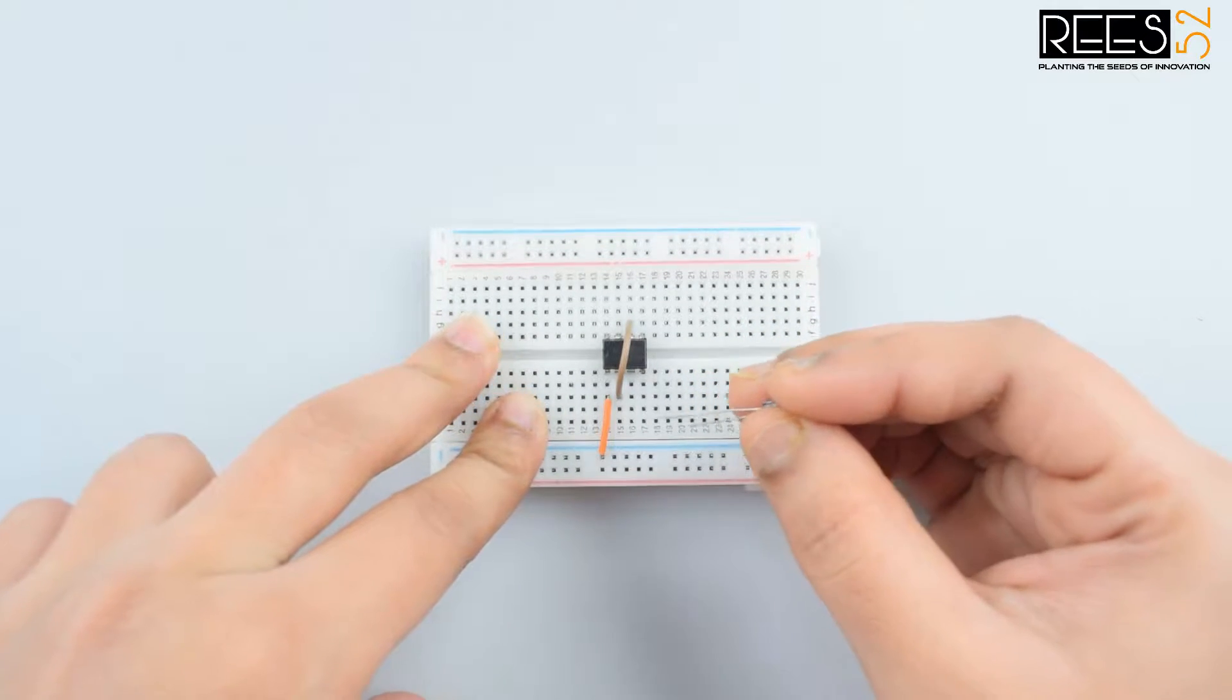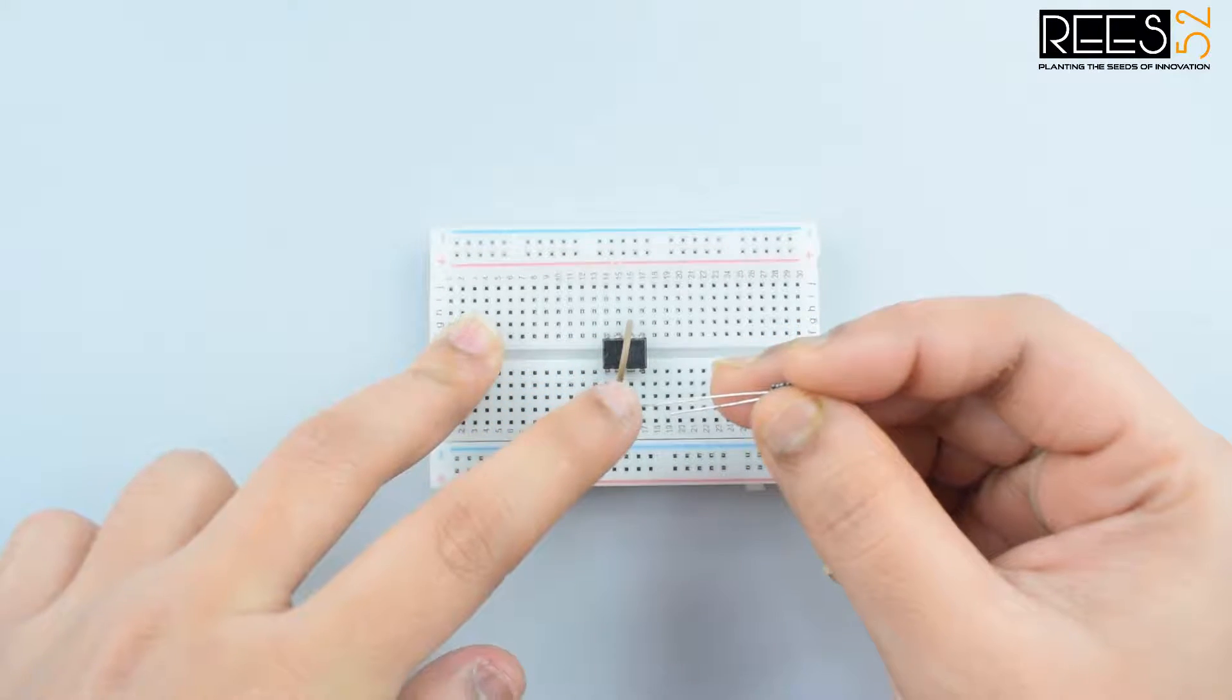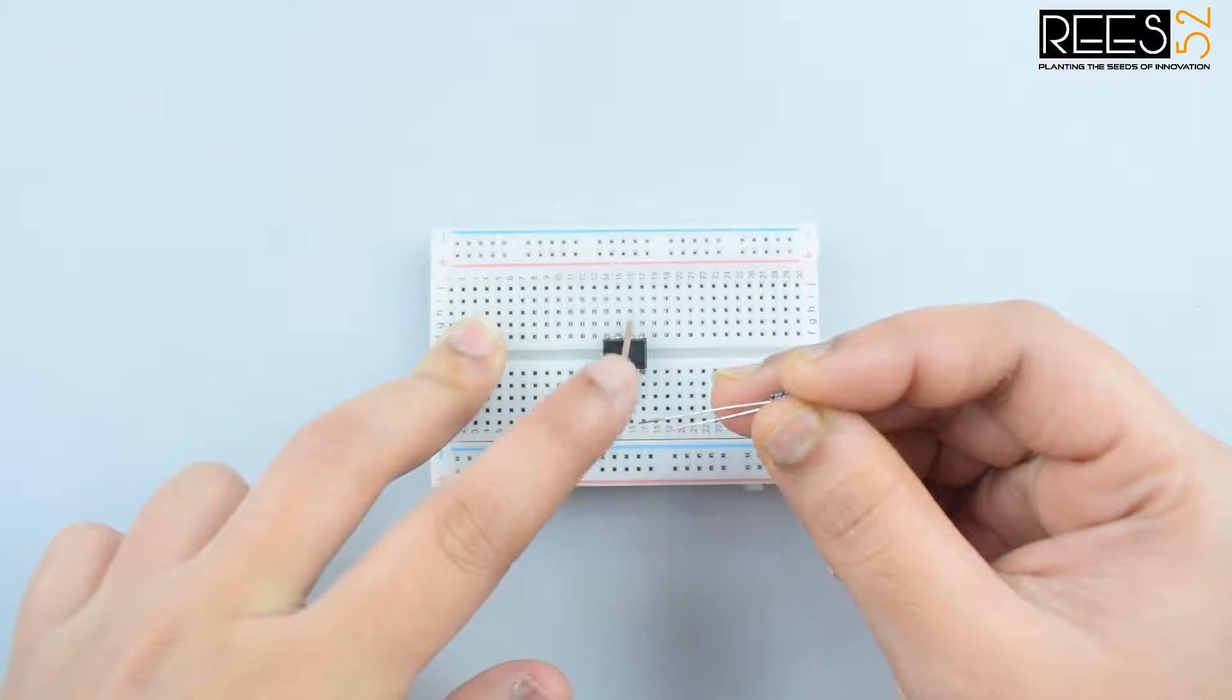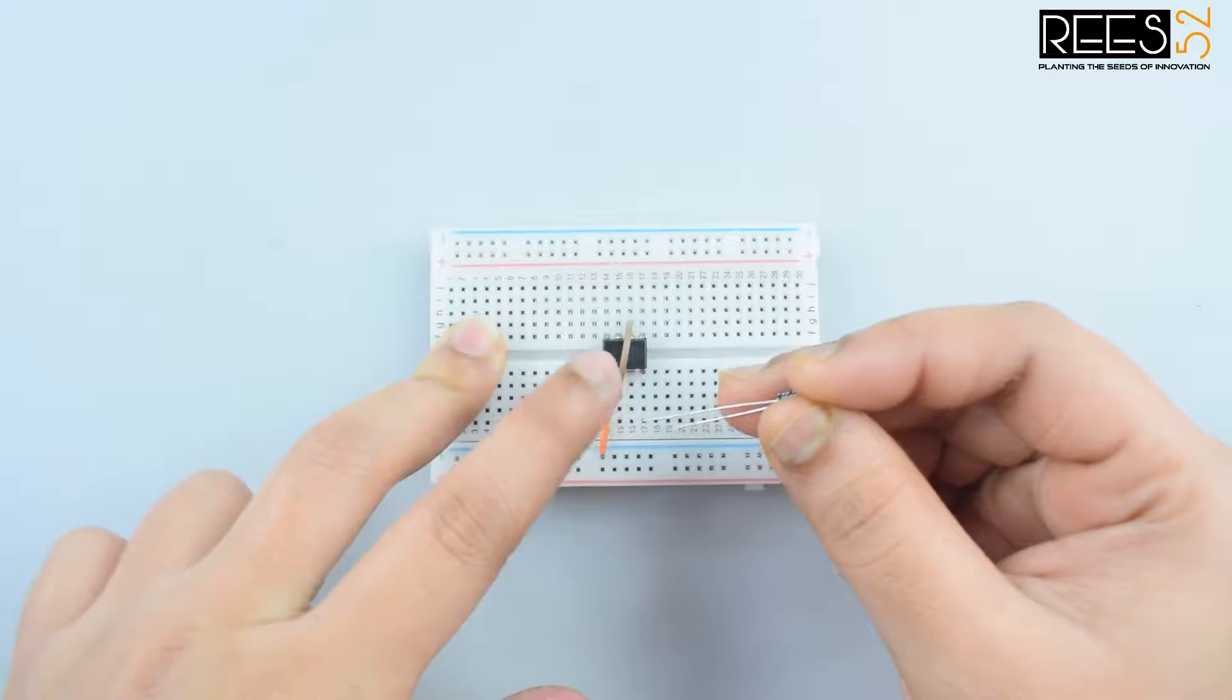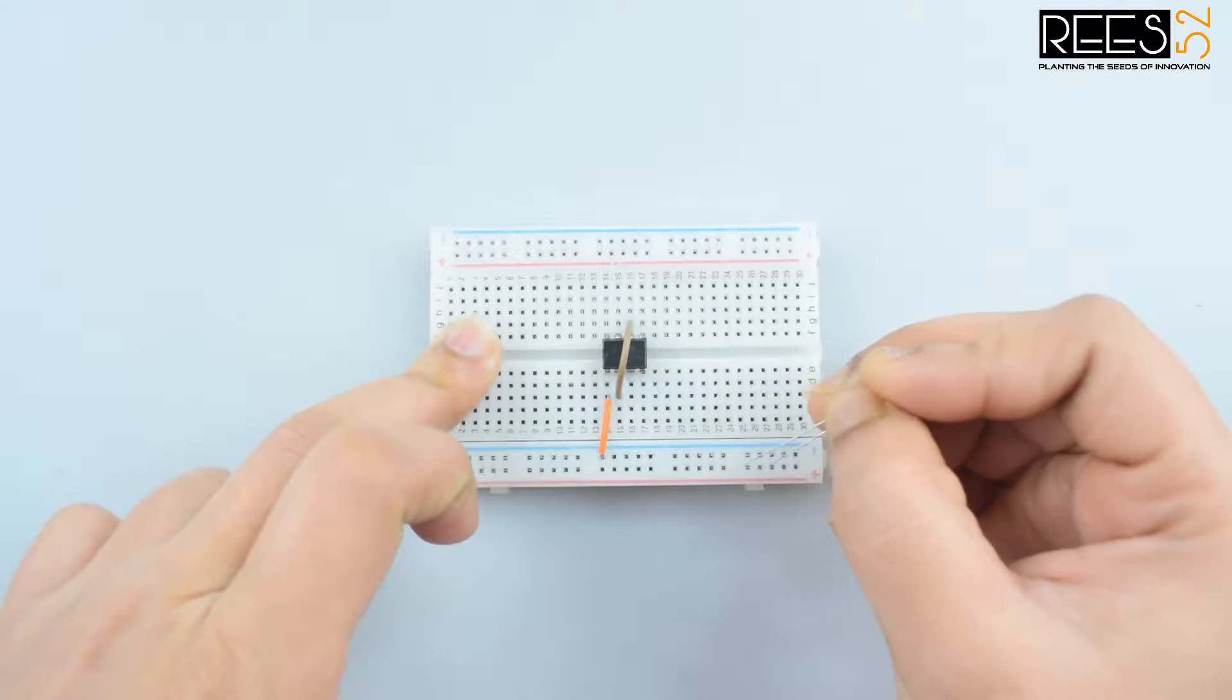Connect pin 2 of the 555 timer IC to the anode of the 4.7 microfarad capacitor. I am using this to get fast response. Connect the negative pin of the capacitor to the negative rail on the breadboard.